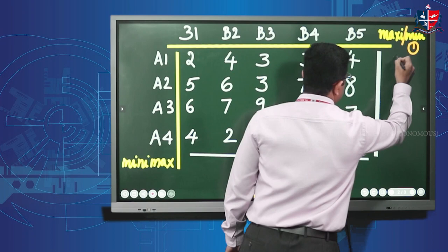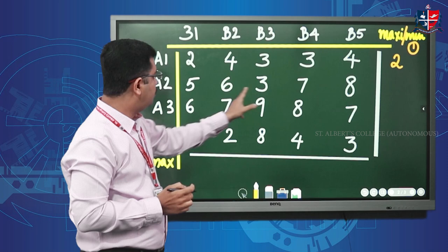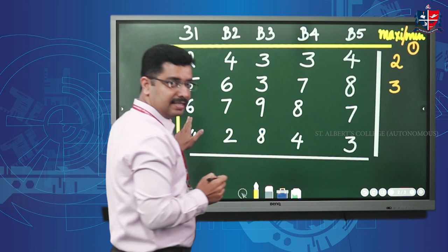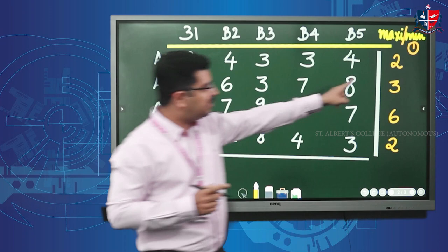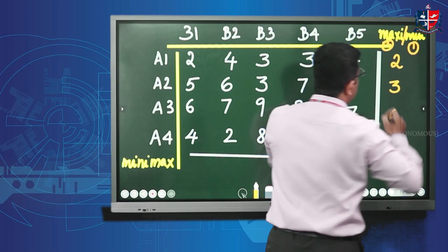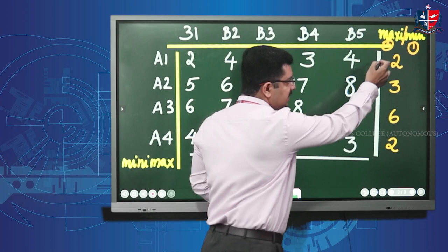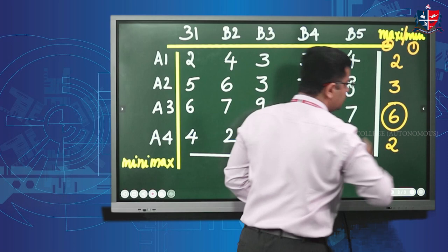The minimum of the second row is three, the minimum of the third row is six, and the minimum of the last row is two. Now do the second operation — 'max'. Among these values two, three, six, and two, the maximum value is six. Circle that and keep it.